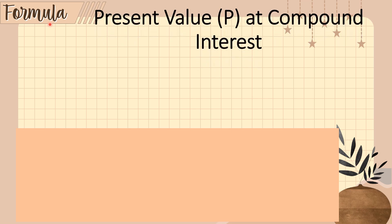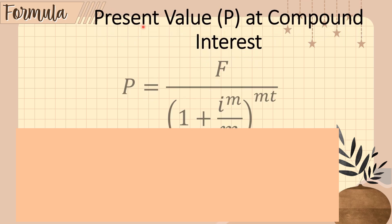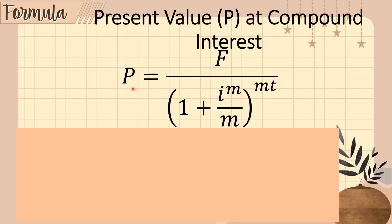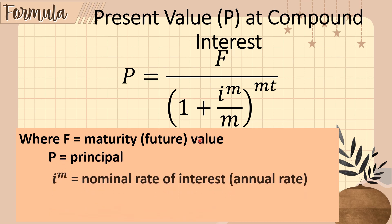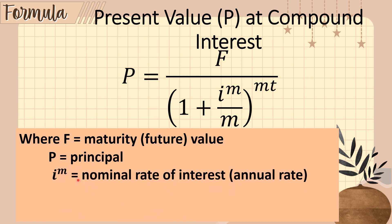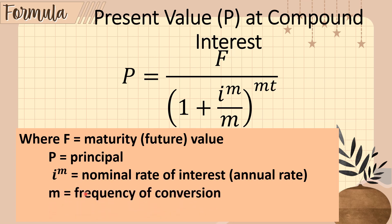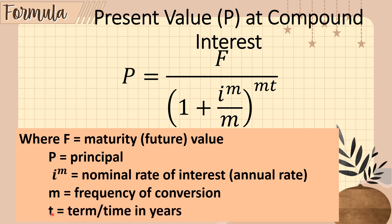Now let's discuss the formula for finding the present value at compound interest. The formula is: P equals F divided by (1 plus I sub M over M) raised to the power M times T. Where F is the maturity or future value, P is the principal, I sub M is the nominal rate, M is the frequency of conversion, and T is the time or term in years.